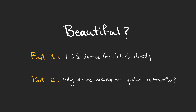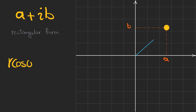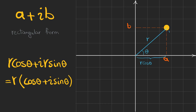The first step is to know how to show a complex number on a 2D plane. The rectangular form is written as a plus ib, where a is the real part and ib is the imaginary part. We can also use polar form, where r is the distance from the origin and theta is the angle. We have an x component and a y component, so a equals r cosine theta and b equals r sine theta.